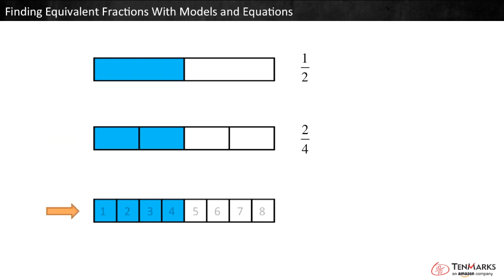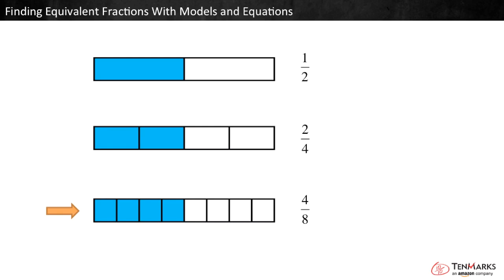In the last model, the same size whole is divided into eight equal parts, and four are shaded. This represents four eighths. You can see that the same amount of the whole is shaded in all three models. So one half, two fourths, and four eighths are equivalent fractions — they are different ways of representing the same part of a whole.